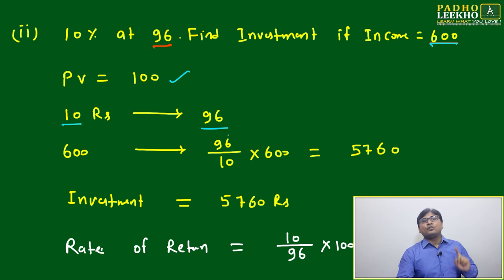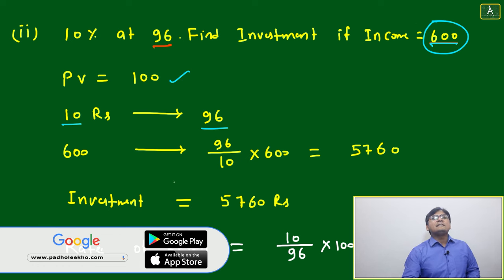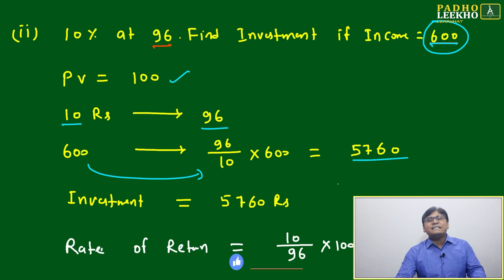Total income you're getting is 600. To get 600, how much do you need to invest? 96 divided by 10, multiplied by 600, equals 5760 rupees.